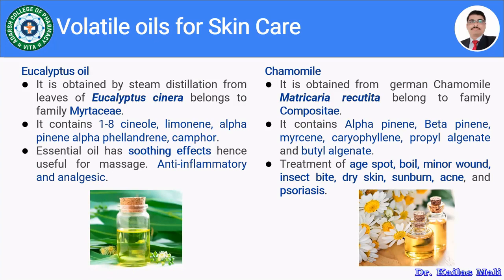The next volatile oil is chamomile. It is obtained from German chamomile, Matricaria recutita, belonging to family Compositae. It contains alpha-pinene, beta-pinene, myrcene, caryophyllene, propyl angelate and butyl angelate. It is used in the treatment of age spots, boils, minor wounds, insect bites, dry skin, sunburn, acne and psoriasis. It is used for preparation of various skin cosmetics due to all these applications.